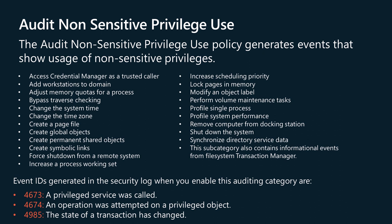The following events will be enabled if you configure auditing through this policy: 4673, a Privileged Service was called; 4674, an Operation was attempted on a Privileged Object; 4985, the State of a Transaction has changed.